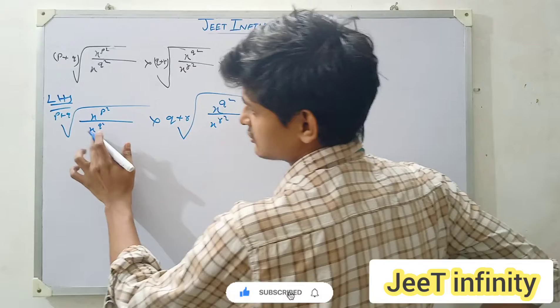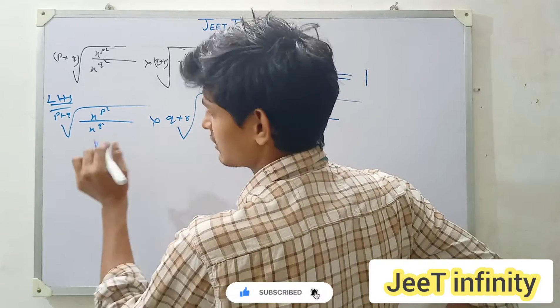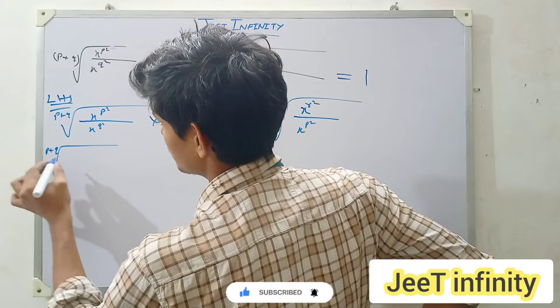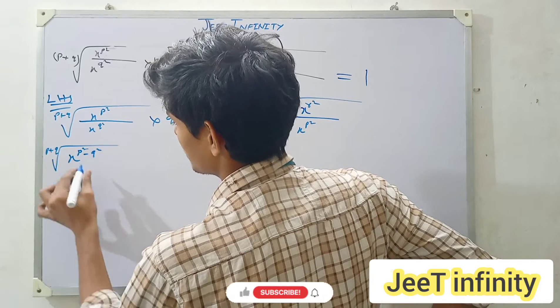Root over (p plus r). What can we do? Root over (p plus q), x to the power p over x to the power q.